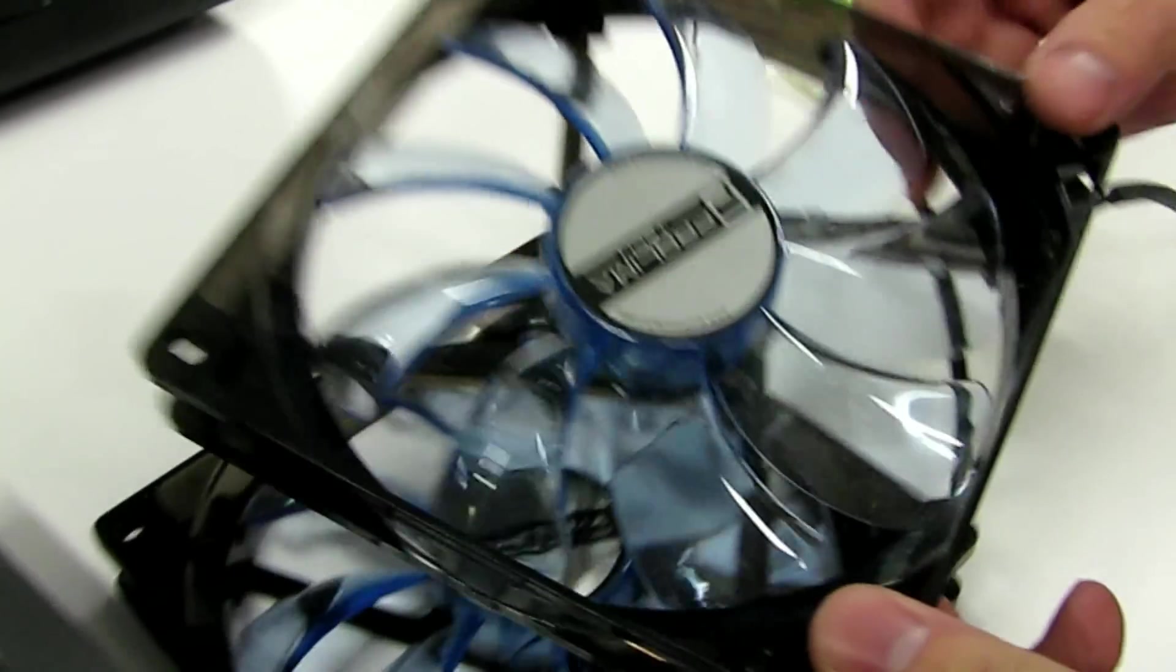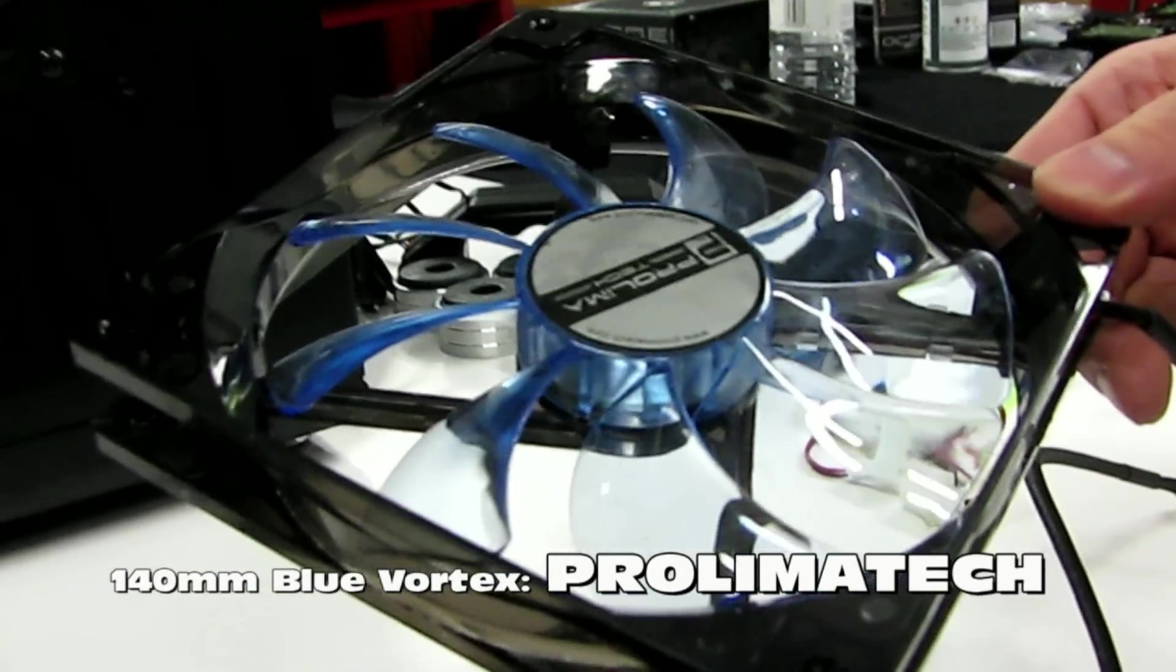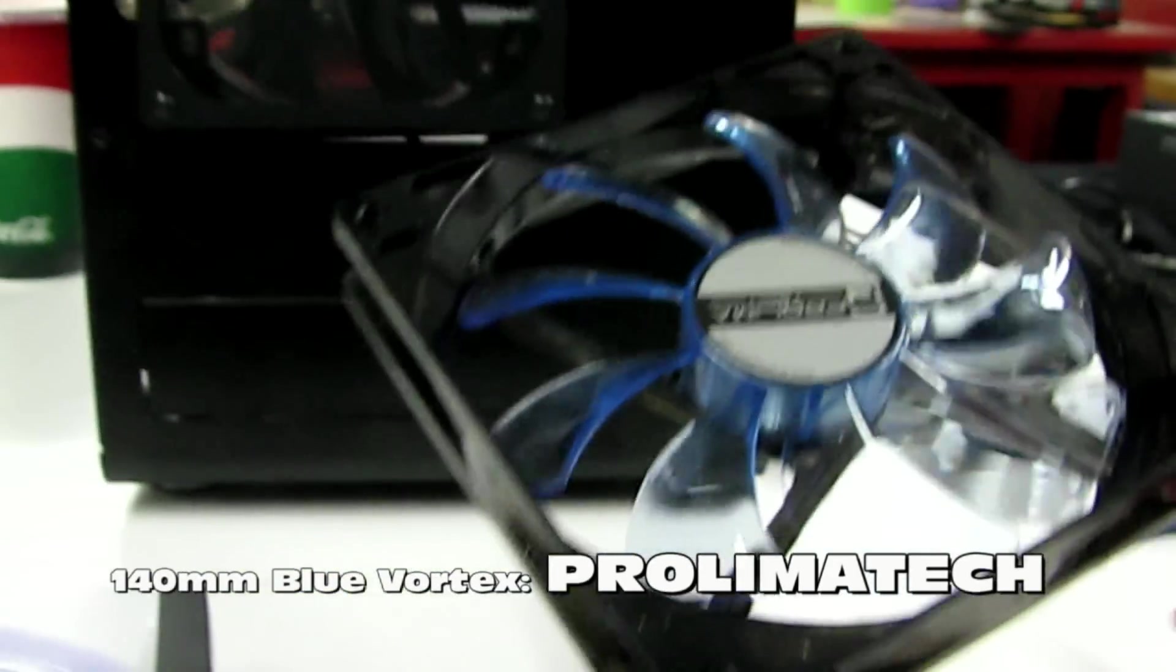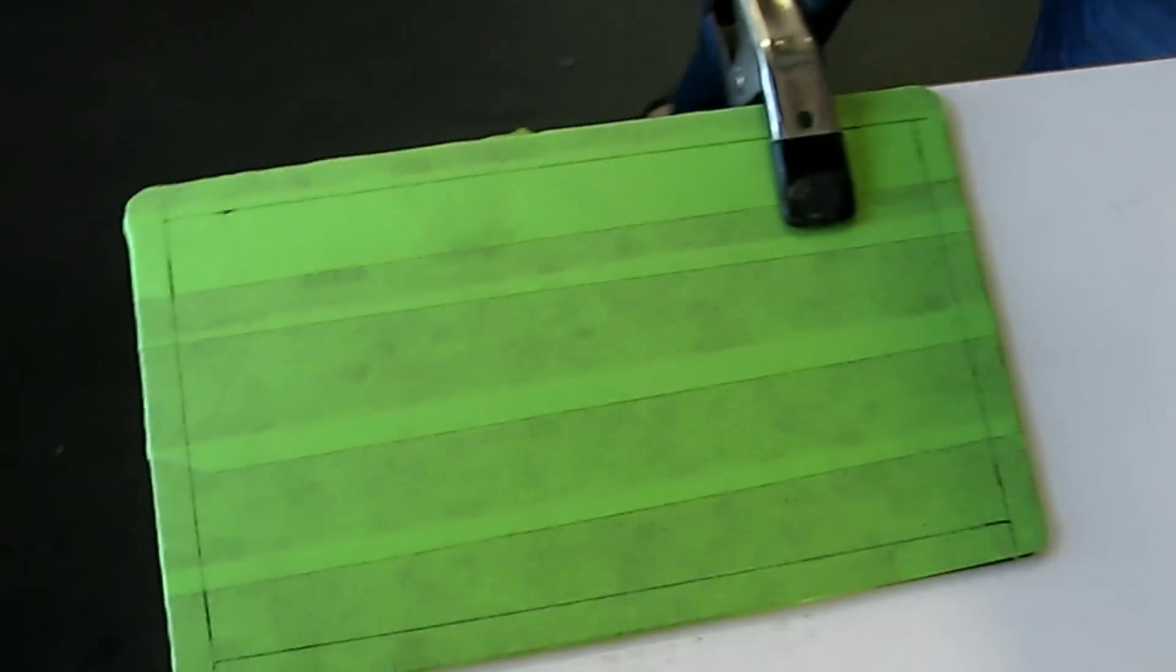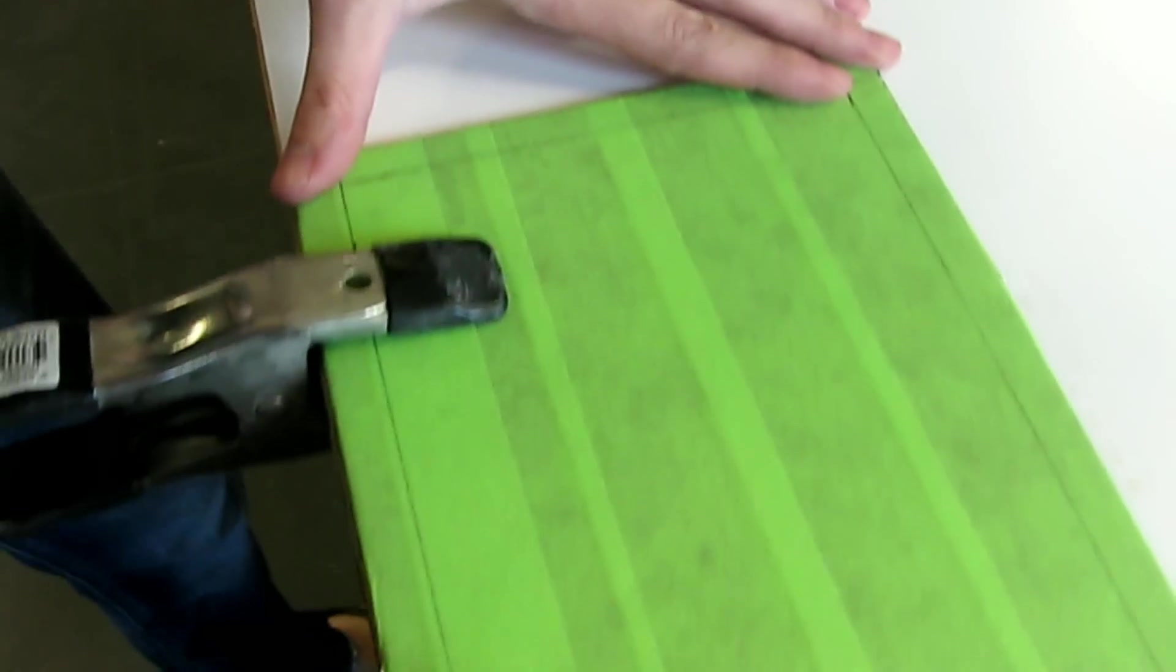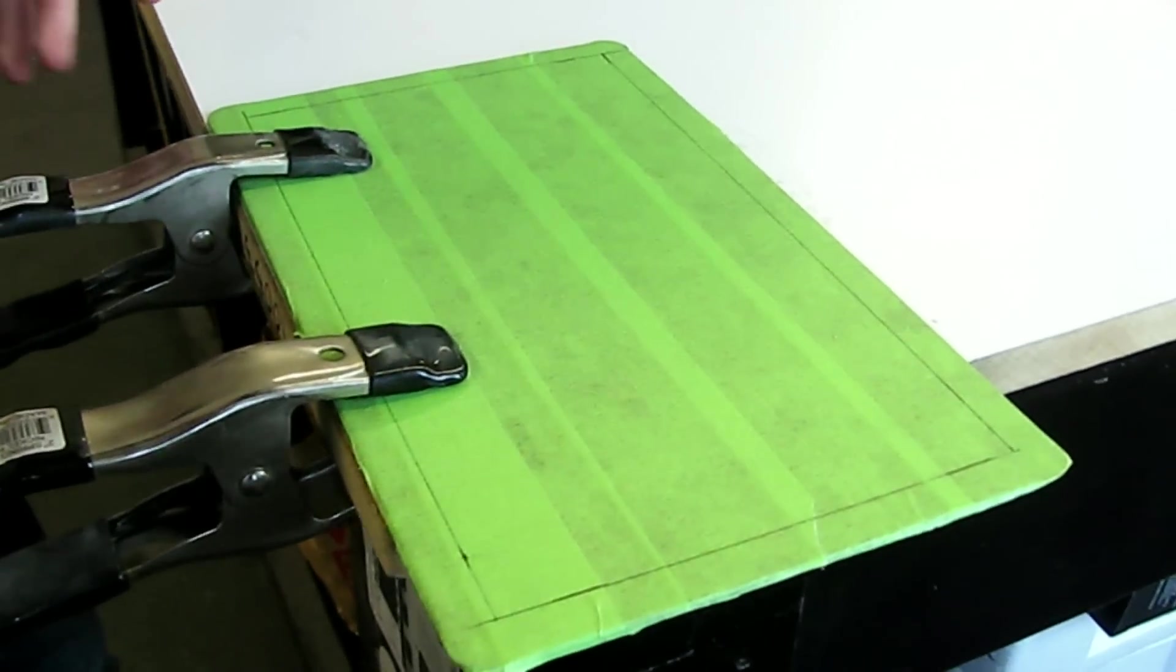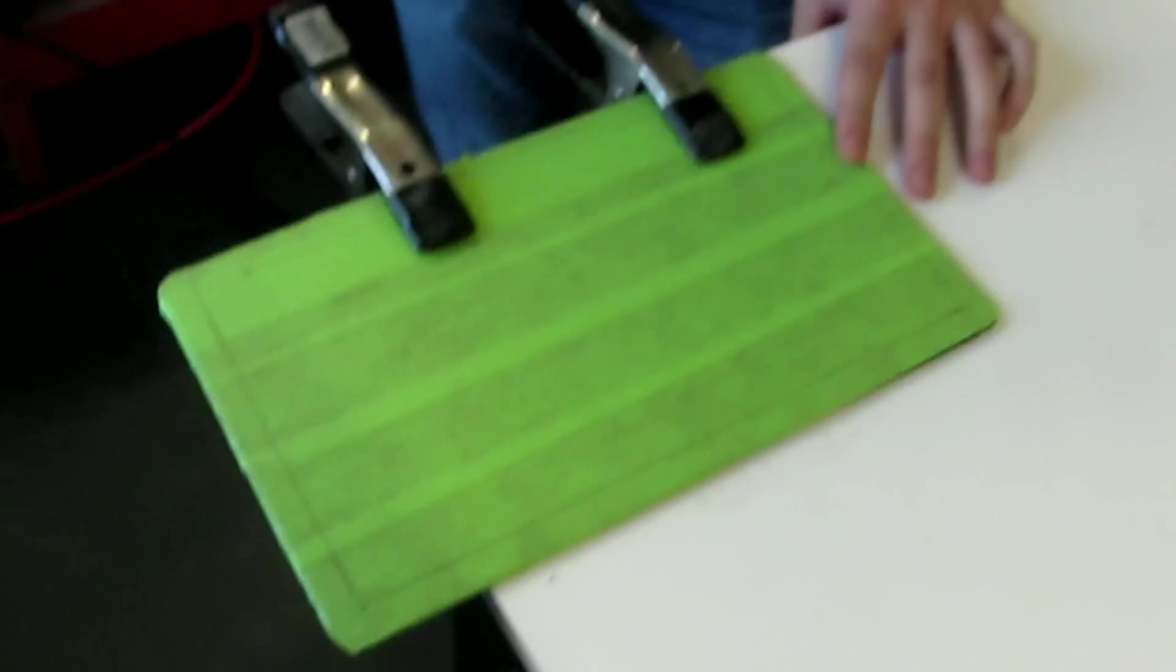For the front of the case, we've got these 140mm blue LED fans from Prolimitech. They push 87 CFM at 18 decibels and they're going to be a great addition. We've got the front plate that we're getting ready to cut into and make an opening for some modders mesh. I'm going to clamp this down, and then we're going to do the same thing that we did with the side panel. Start with the Dremel and take out some starter edges in the corners, then rip the rest with a jigsaw.